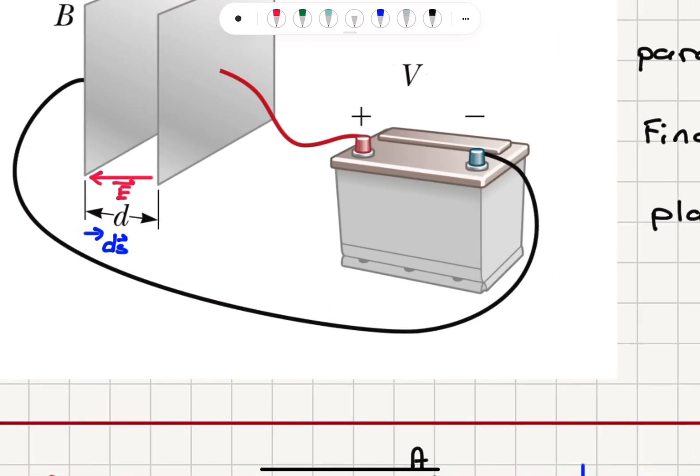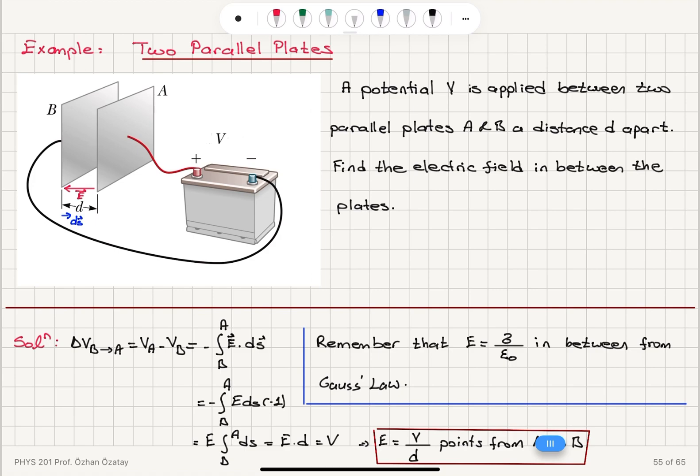And if I integrate E dot Ds going from B to A such that the Ds vector points from B to A, therefore, electric field and Ds vector will make 180 degrees angle. Cosine 180 is minus 1. So this will give me E Ds with a minus 1. And going from B to A, the integral of Ds is D. E times D is V.